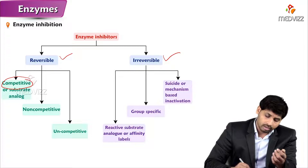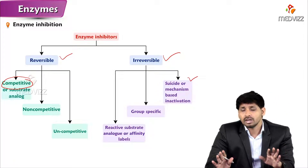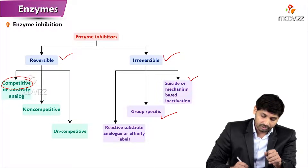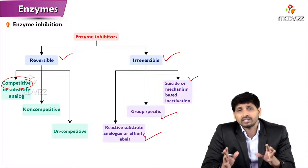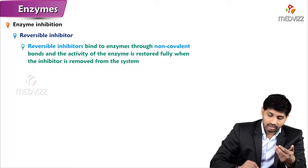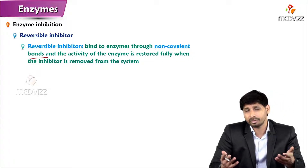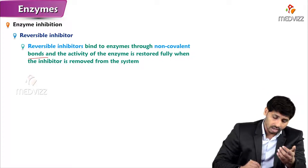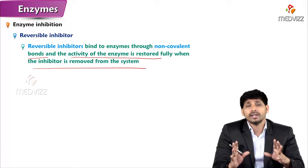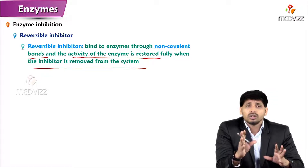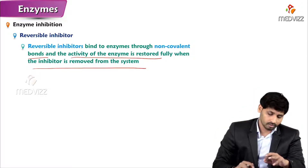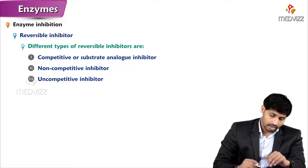For irreversible inhibition, once the inhibitor binds, the enzyme is permanently inactivated. Examples include suicide inhibition, group-specific inhibition, and affinity-based inhibition. Reversible inhibition involves binding through non-covalent bonds such as hydrogen bonds, hydrophobic interactions, van der Waals forces, and electrostatic interactions. The activity of the enzyme is fully restored when the inhibitor is removed, and the reaction can proceed normally once the inhibitor is absent.